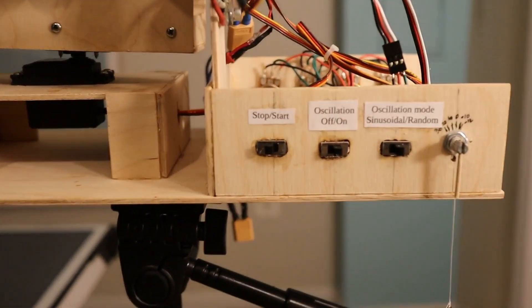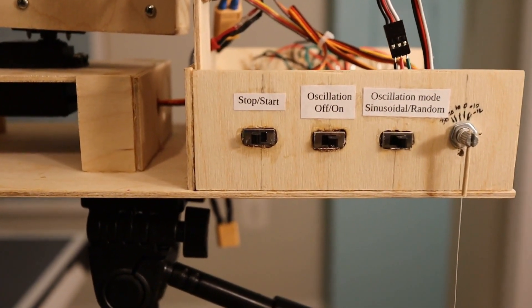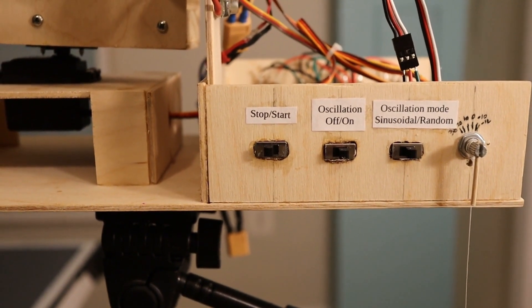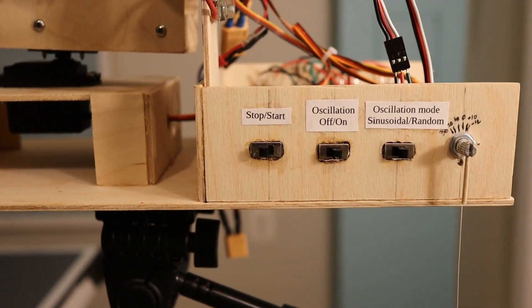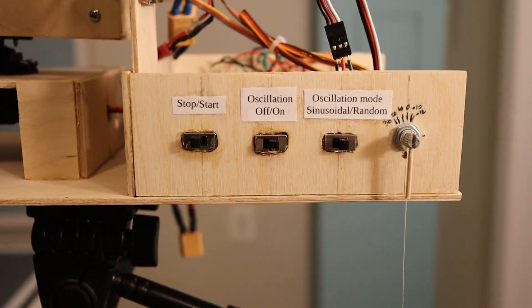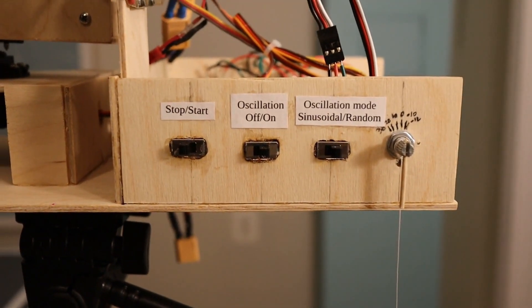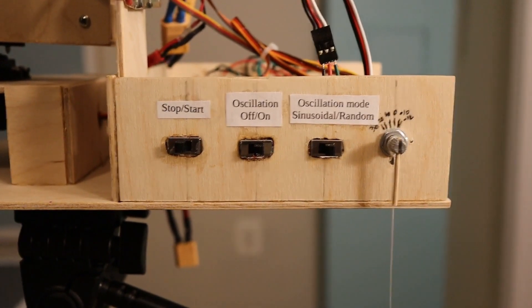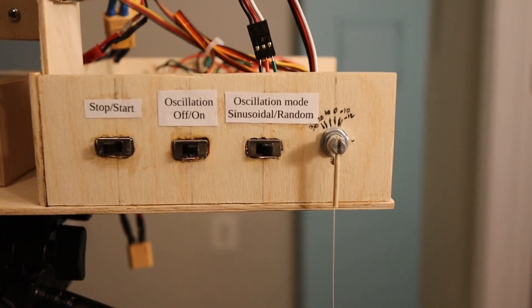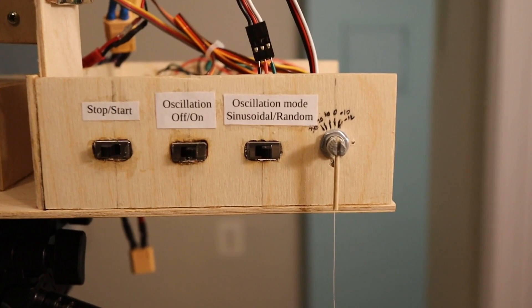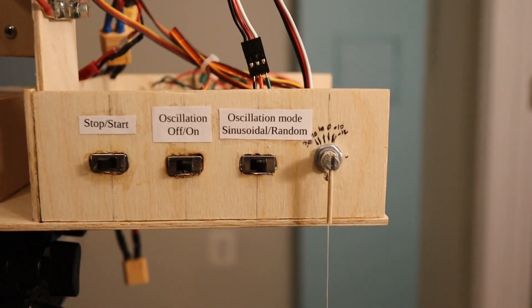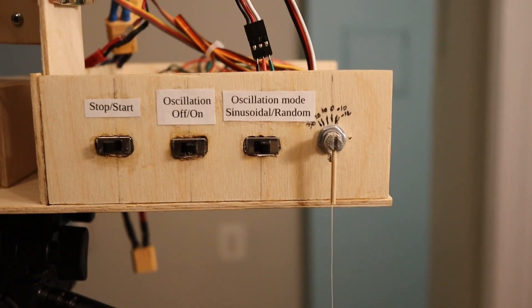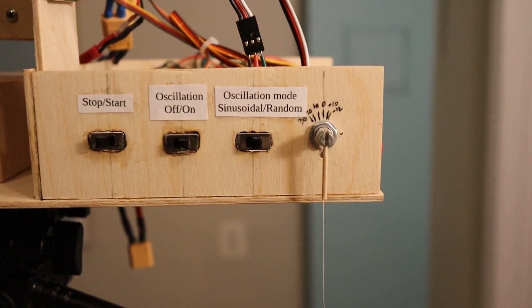So let's look at the controls. So here on this side, we have three switches. We have the start and stop switch, which will make the balls start dropping, motors turn on, things like that. This switch will control whether the thing is going to oscillate left and right or not. And then the next one will control the mode that it oscillates. So if you have it on the sinusoidal mode, it's just going to continuously go back and forth left and right. If you have it on random, then it's going to do a random left and right rotation.